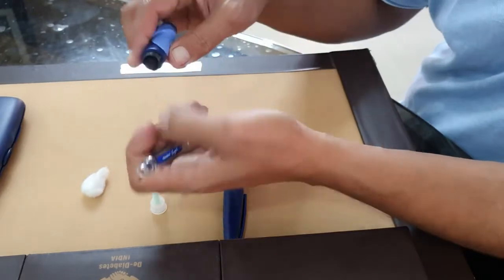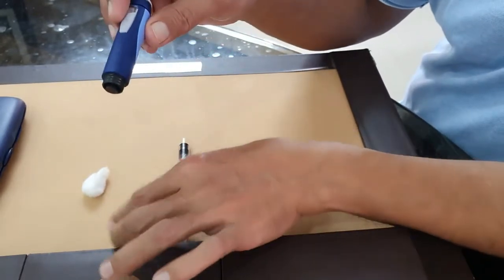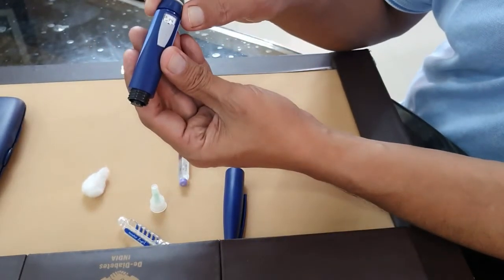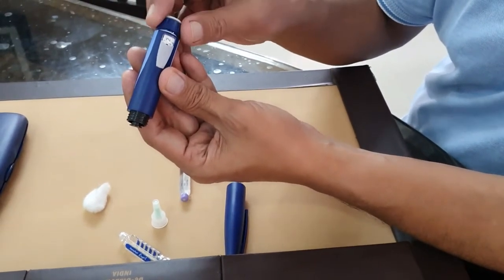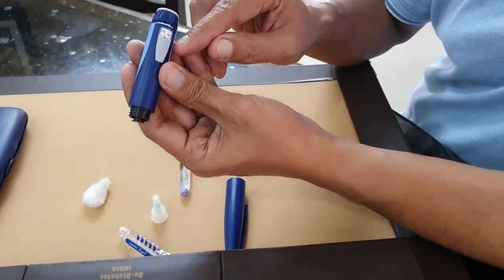The base of the insulin body has a piston in the bottom where you can slowly rotate like this. That is the measure by which you are going to inject the insulin.